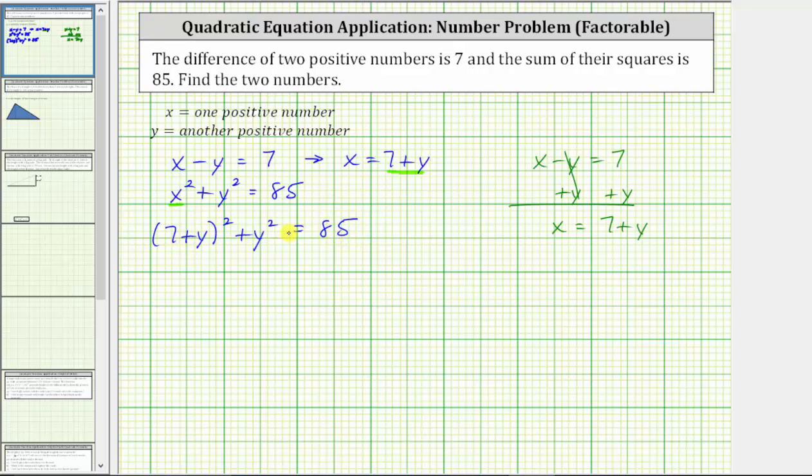For the next step, we simplify the left side by first squaring the quantity seven plus y. To multiply the two binomials, we have four products: one, two, three, and four.